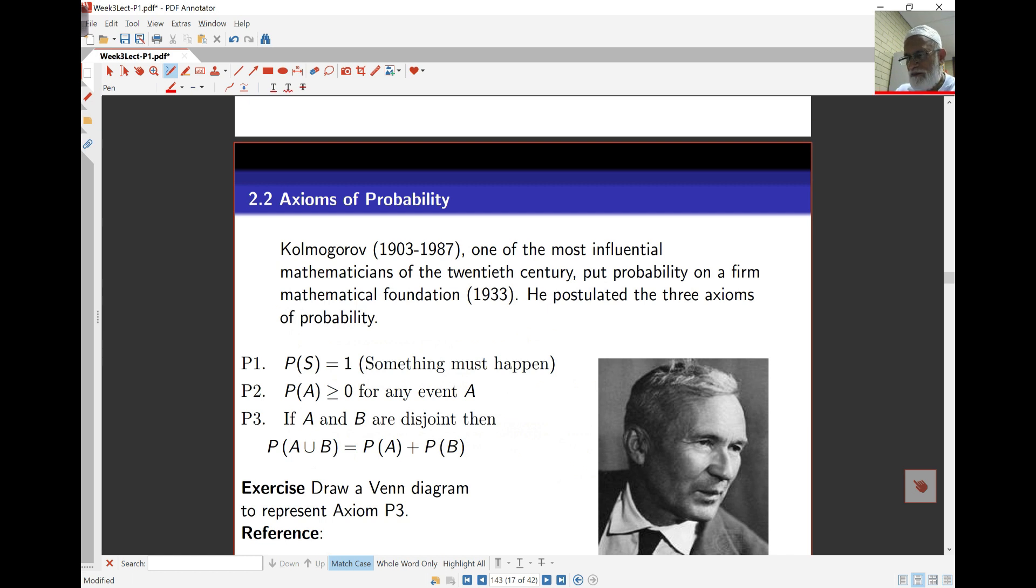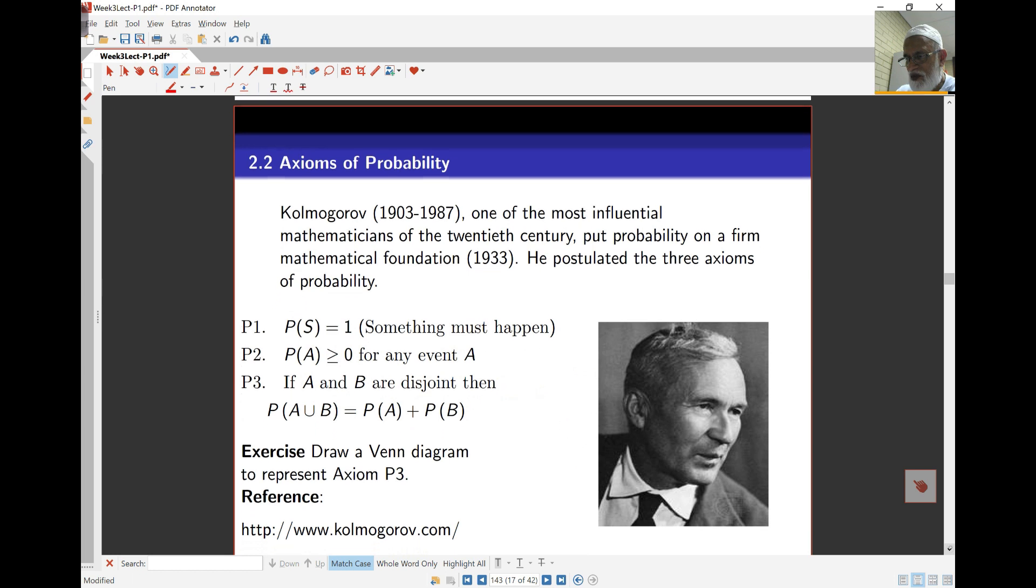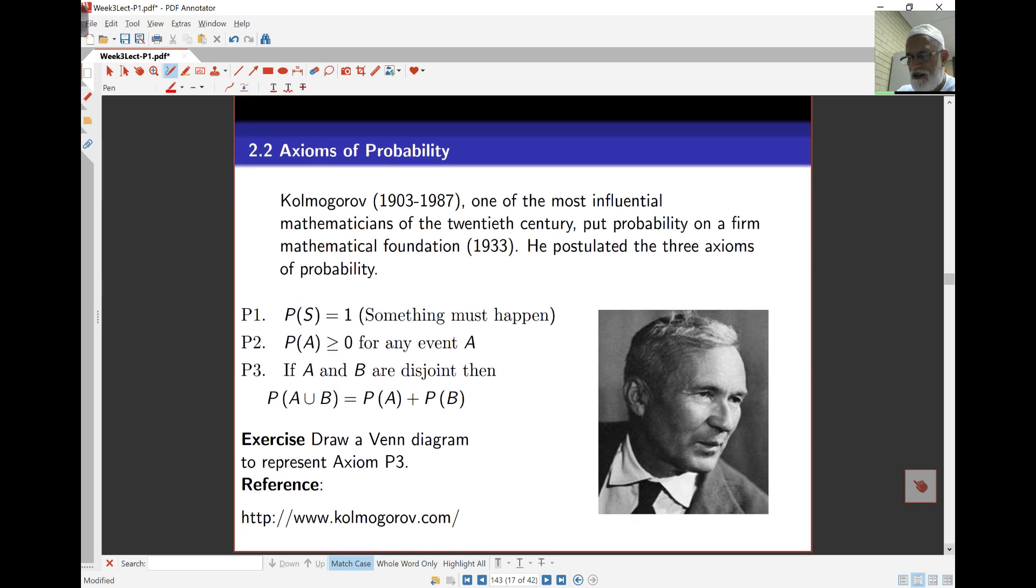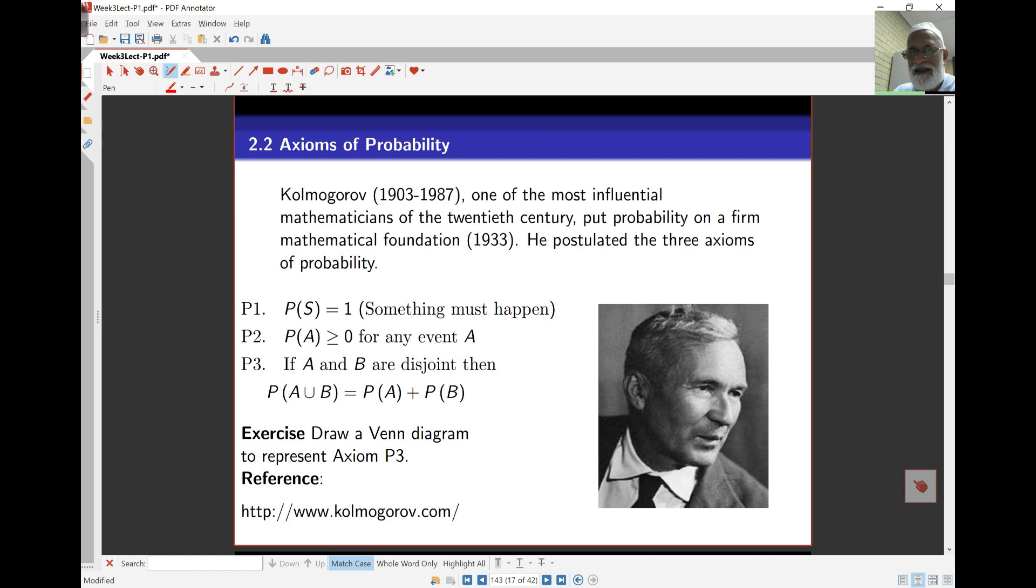Probability itself requires some rules or axioms. Axioms is a big word in mathematics; it essentially means assumptions. But here we can say these are the rules or properties that probabilities need to have. Early last century, this Russian mathematician Kolmogorov was greatly influential in putting probability on a firm mathematical foundation. The three axioms he proposed: first, the probability of the entire sample space is one—something has to happen. Second, probabilities can't be negative—probability for any event is greater than or equal to zero.